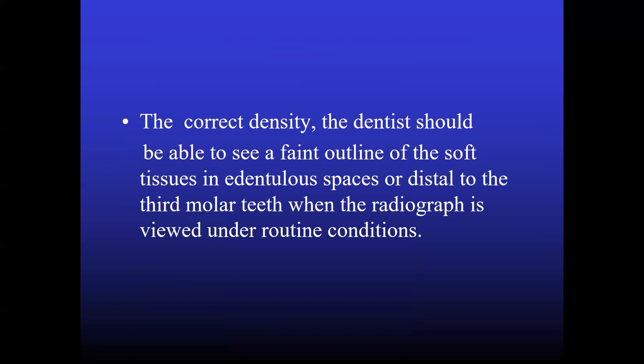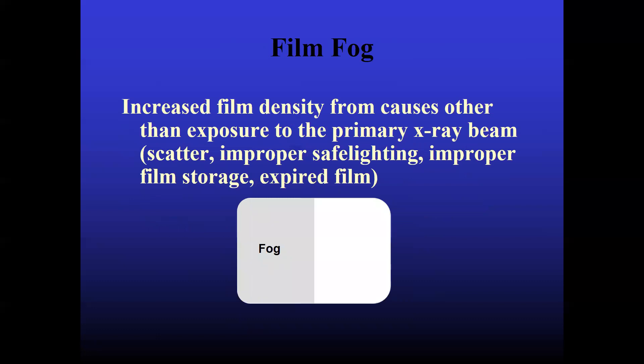The correct density, you should be able to see a faint outline of the soft tissue in edentulous spaces or distal to the third molar teeth when the radiograph is viewed under routine condition. That is, you should be able to identify the air spaces, soft tissue area, and the bone area. This can let you know that it has the correct density.